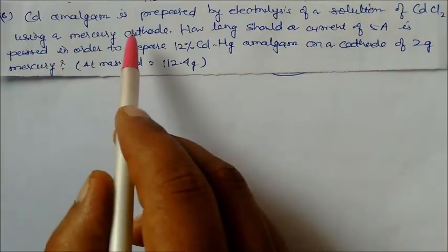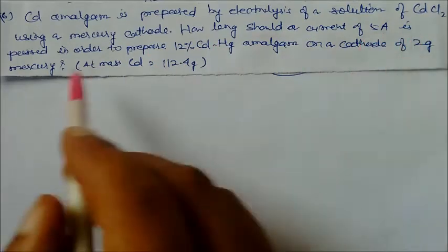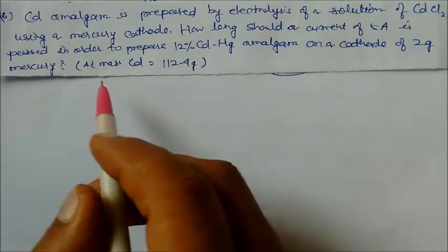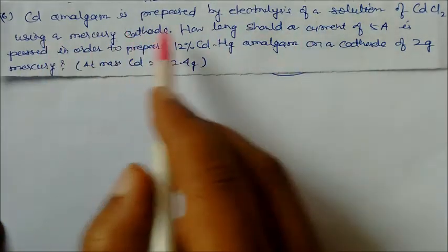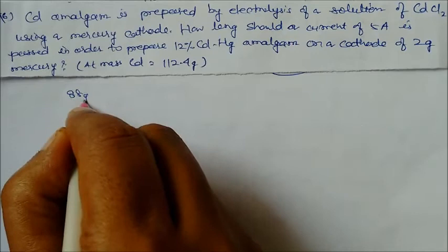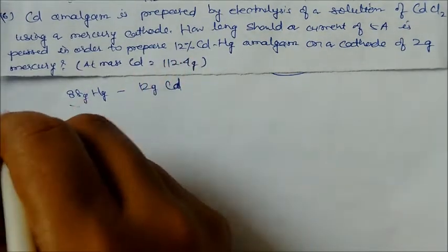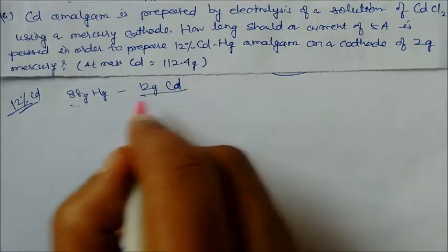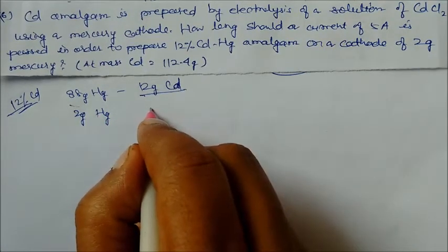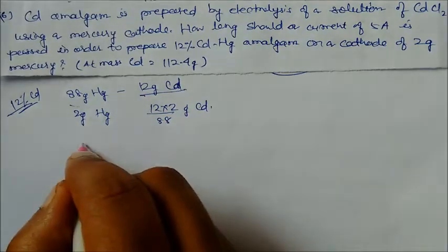Question 6: Cadmium amalgam is prepared by electrolysis of cadmium chloride using a mercury cathode. How long should a current of 5 ampere be passed to prepare 12% cadmium amalgam on a cathode of 2 gram mercury? 12% cadmium means 12 g cadmium per 88 g mercury. For 2 g mercury, cadmium required = 12 × 2 / 88 grams.